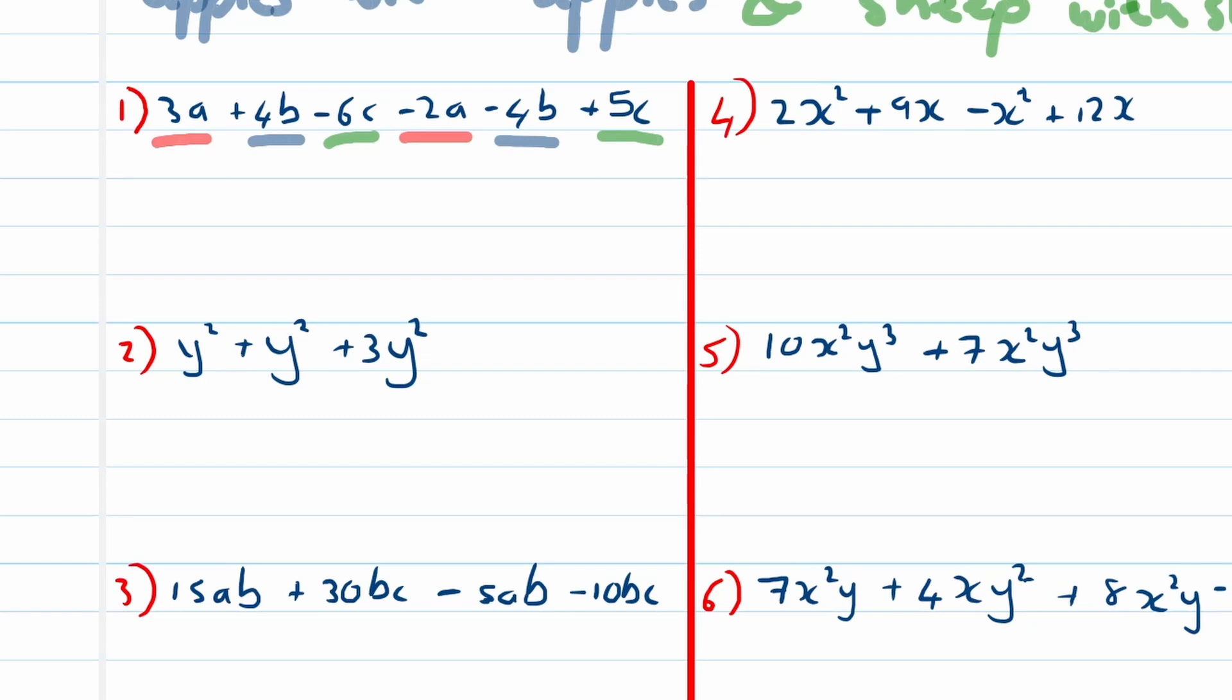So for instance, the answer for this question will be 3a minus 2a which will be a. 4b minus 4b is zero. So for the sake of clarity, I'm just going to write the zero. The negative 6c plus 5c is minus c. Remember, we don't need to write the one. So therefore our final answer here is a minus c. So you can see this example will help you understand this concept.